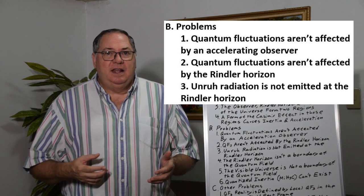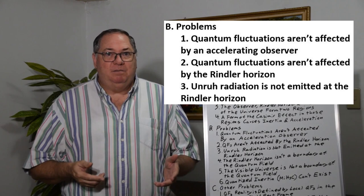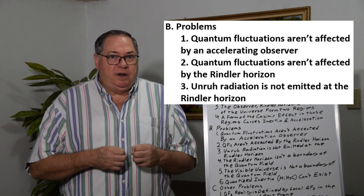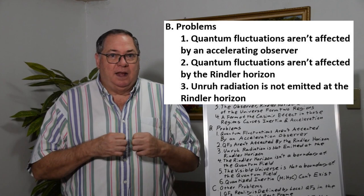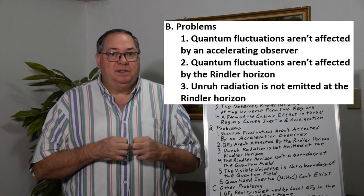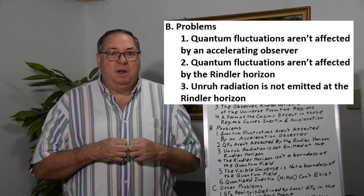We can also see it from the standpoint that the accelerating observer sees a different reality from a non-accelerating observer. But when we're considering the quantum fluctuation, either the quantum fluctuation annihilates and all the energy goes away, or something happens and it gets converted to light. It can't do both.